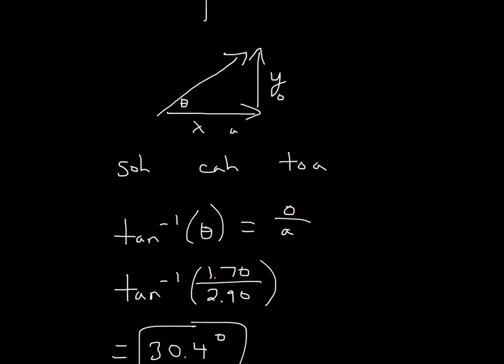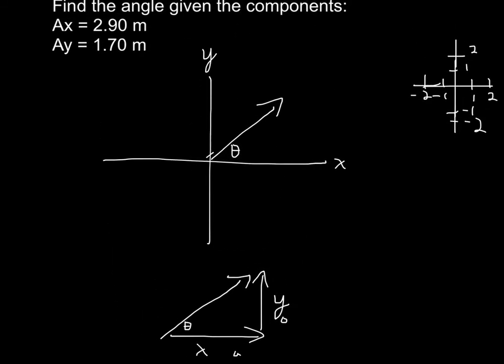Opposite, which is 1.7, over adjacent, 2.9. So the opposite is the Y axis, 1.7 over 2.9.